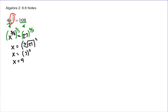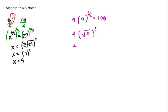A quick check: 4 times 9 to the 3/2 — only the 9 gets the 3/2 exponent, not the 4. So this is 4 times the square root of 9 cubed, which equals 4 times 3 cubed, which is 4 times 27, which equals 108. ✓